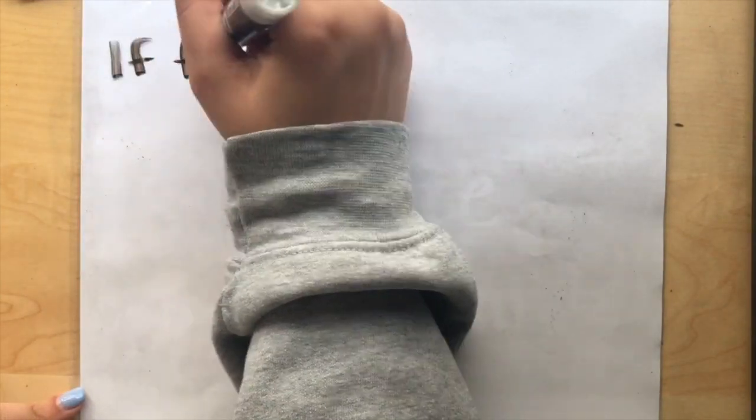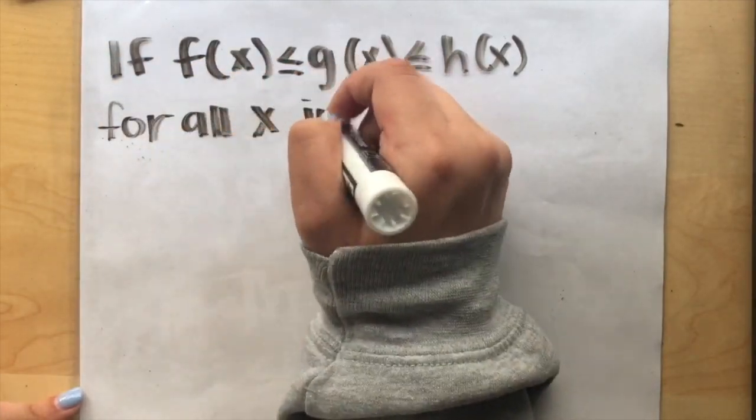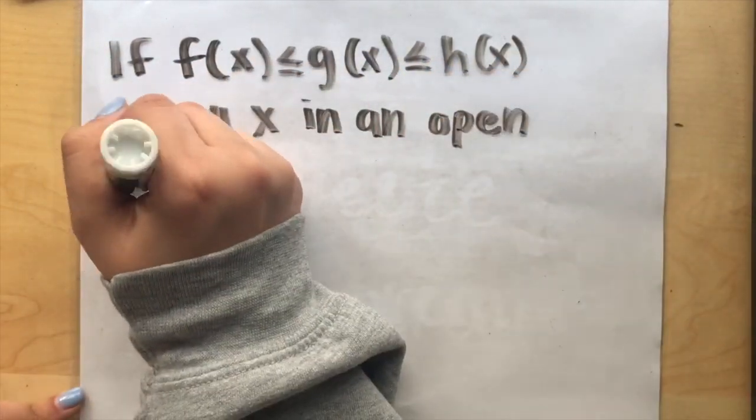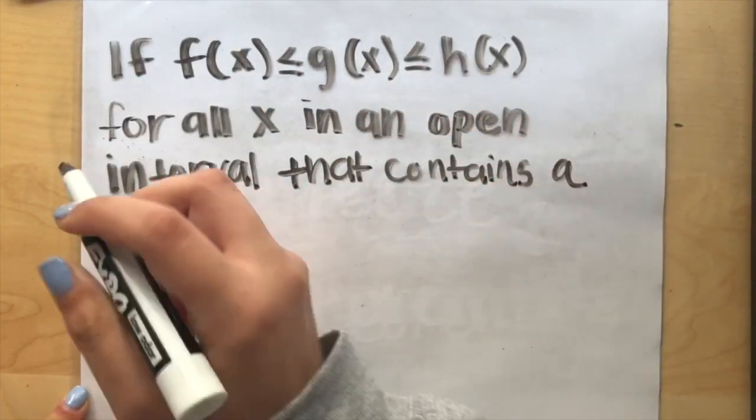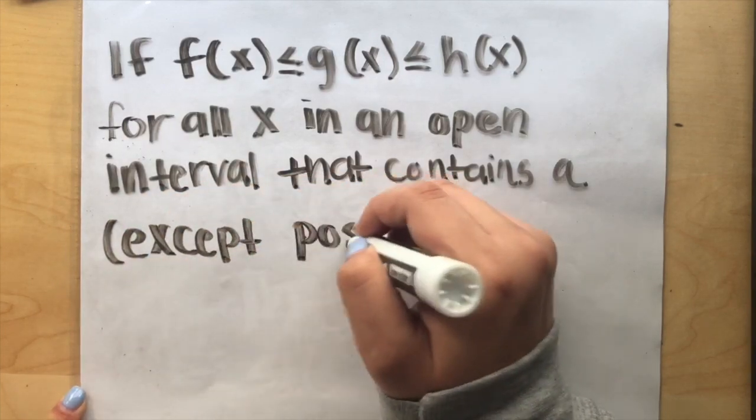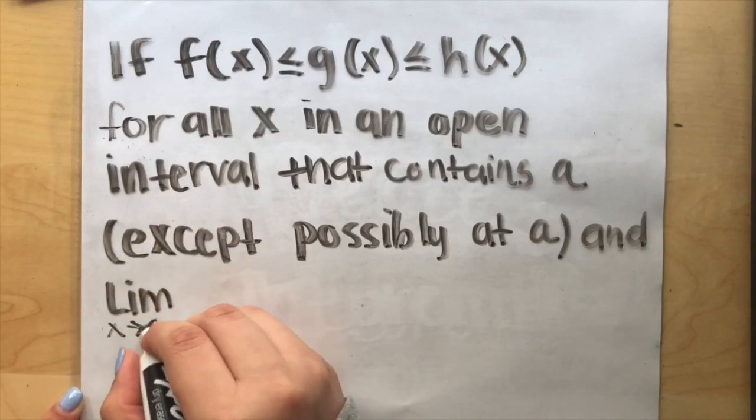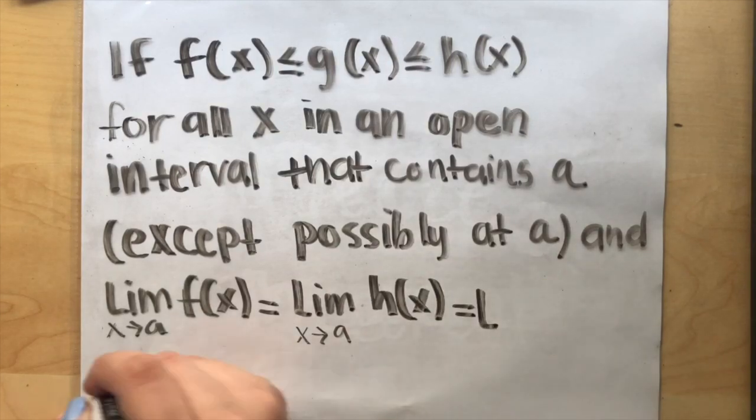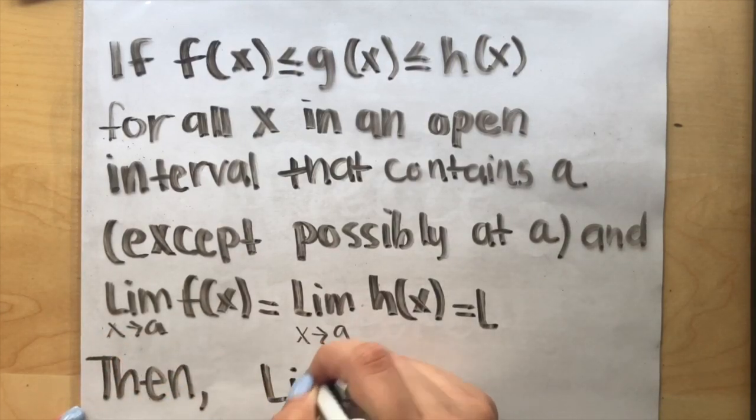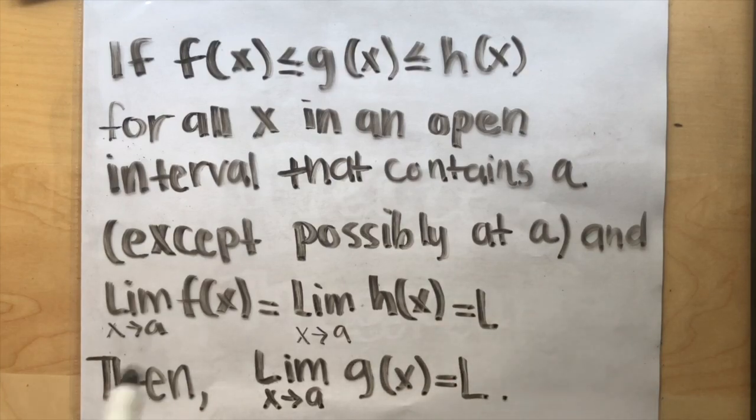Overall, this theorem states, if f of x is less than or equal to g of x, which is less than or equal to h of x, for all x in an open interval that contains a, except possibly at a, and the limit as x approaches a of f of x equals the limit of h of x, which equals L, then the limit of g of x as x approaches a is equal to L also.